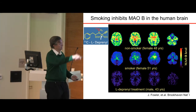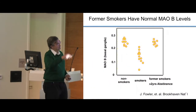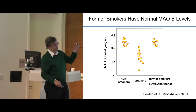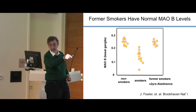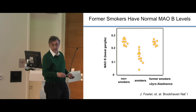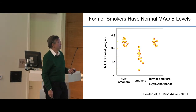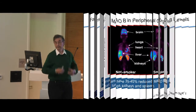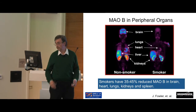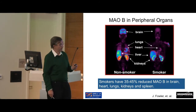They did whole-body studies and showed that people who went in abstinence for two or more years would actually restore their monoamine oxidase. They also showed that monoamine oxidase in smokers is reduced throughout the body in many different organ systems.